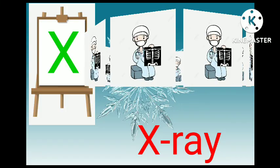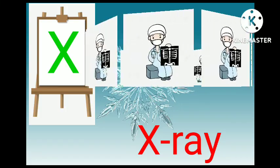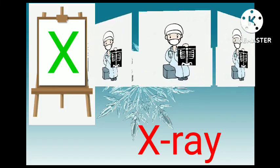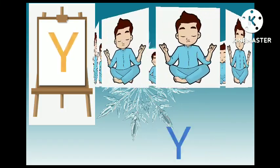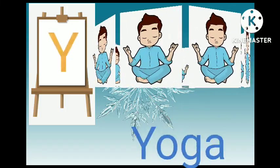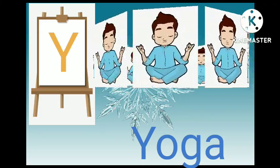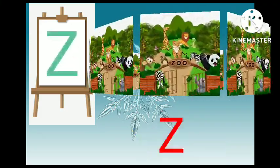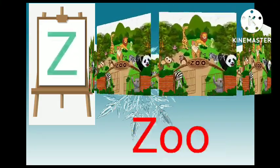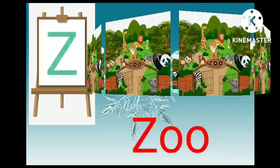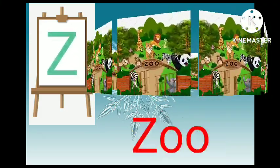X for egg pot, Y for egg pot, Y for Yuga, Z for zooker. Thank you.